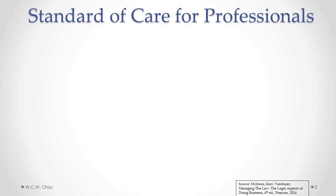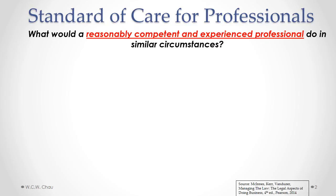If the person being sued for negligence happens to be a professional — such as a lawyer, a doctor, an accountant, or an engineer — then we don't apply the general standard of a reasonable person, because a reasonable person does not have the expertise or training of those professionals. So we apply a higher standard to professionals. The question we ask is: what would a reasonably competent and experienced professional do in similar circumstances?